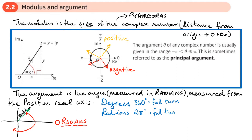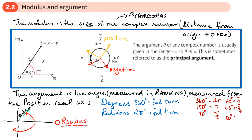We can work out related angles: 360 degrees equals 2π, 180 degrees is π, 90 degrees is π/2, 60 degrees is π/3, 45 degrees is π/4, and 30 degrees is π/6. So we can write lots of angles exactly in terms of π.